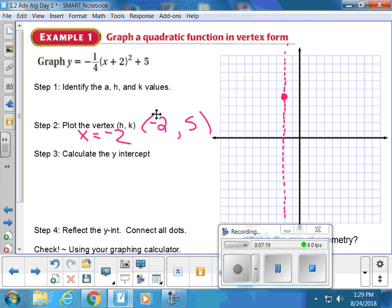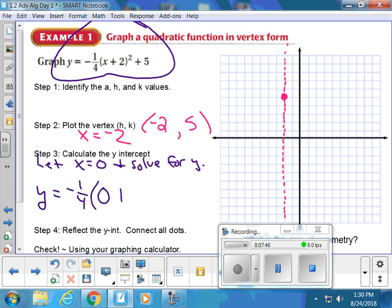Alright. We've arrived to something we have not done yet this year, calculating out y-intercepts. Y-intercepts are dots that live on this y-axis that I'm pointing to. And if a coordinate lives on the y-axis, it has an x value of zero. So what we're going to do is we're going to let x equal zero and solve for y. So it's just plugging a zero in for x in the original equation up at the top. So I'll do negative one fourth, zero plus two squared plus five. Feel free to type all that in at one time. You can type it all in the calculator.